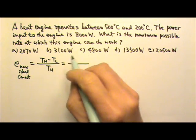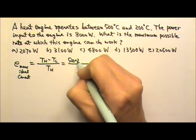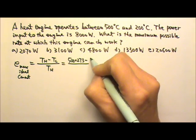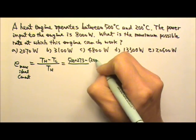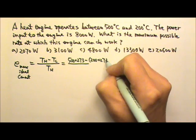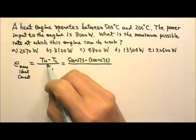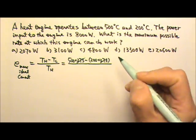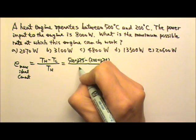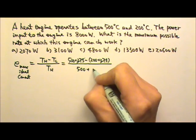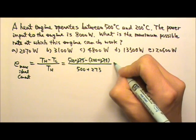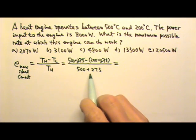So the high temperature would be 500 plus 273, and then the low temperature should be 200 plus 273. But of course, if you're just looking for the difference, the 273 would just cancel. But down here, it must be 500 plus 273. And so this is the maximum efficiency.